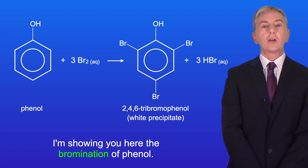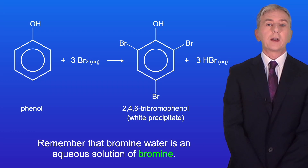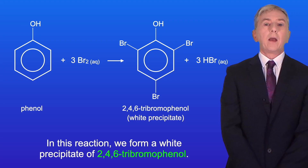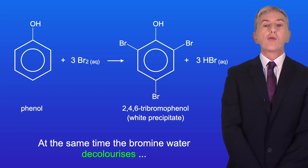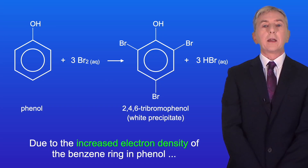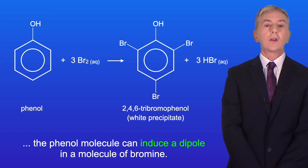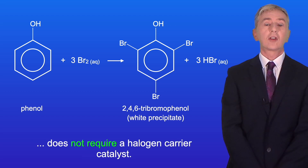Here I'm showing you the bromination of phenol. Phenol reacts readily with bromine water at room temperature — bromine water being an aqueous solution of bromine. In this reaction we form a white precipitate of 2,4,6-tribromophenol, and at the same time the bromine water decolorizes, going from orange to colorless. Due to the increased electron density of the benzene ring in phenol, the phenol molecule can induce a dipole in bromine, so unlike with benzene, bromination of phenol does not require a halogen carrier catalyst.